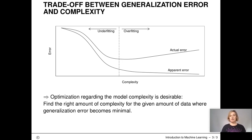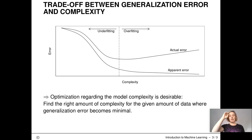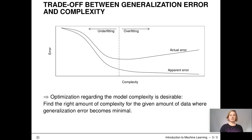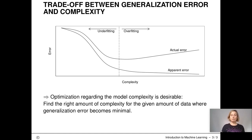The apparent error goes down with increasing complexity, while the actual error first goes down and then goes back up. The reason it goes up at some point is that the model fits too well to the training data only and does not generalize to new data any longer — it overfits. So what we need to do is find the sweet spot in the middle where the model is complex enough but not too complex. We need to find the point where the generalization error becomes minimal.